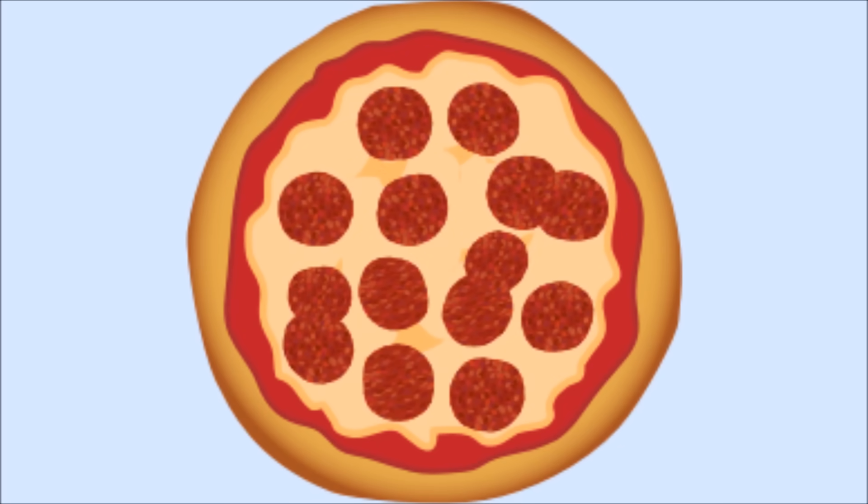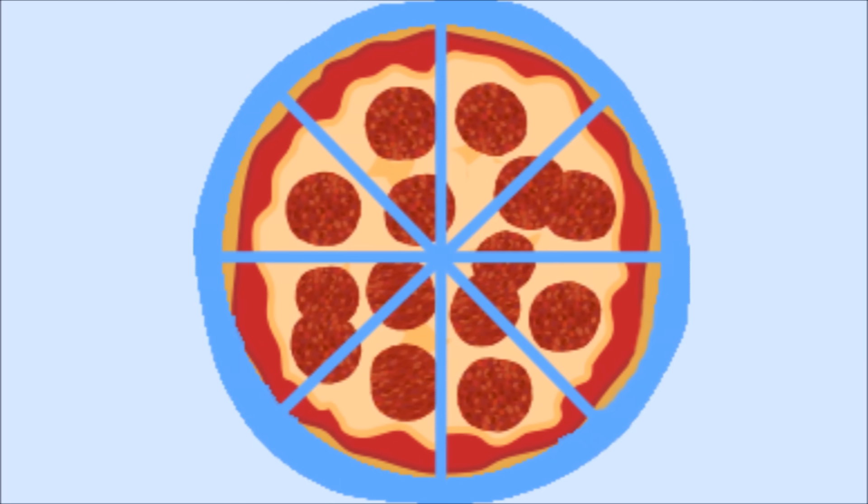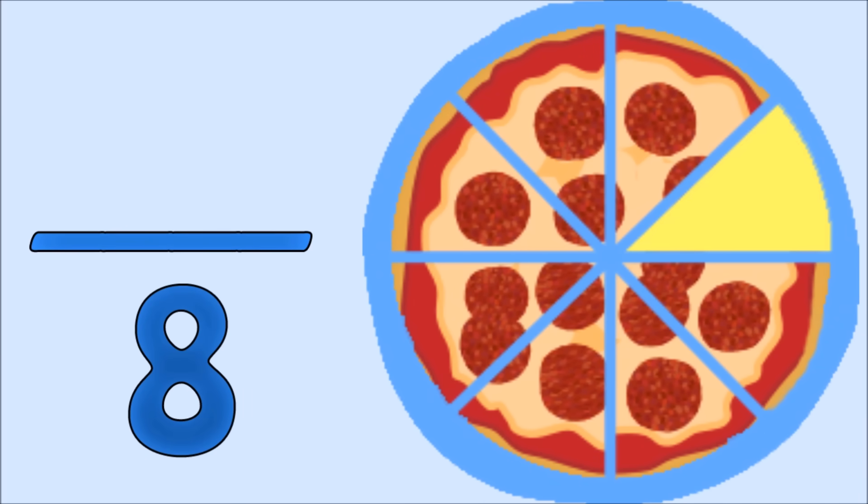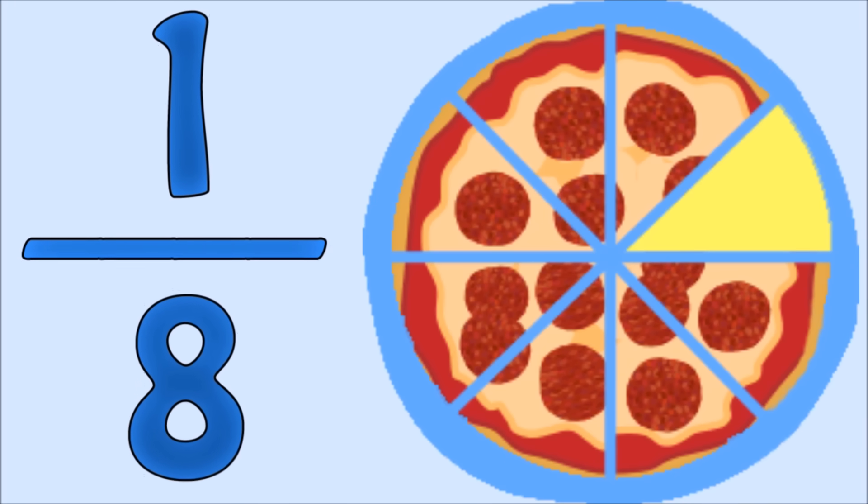For example, a pizza is usually divided into eight slices. That means that in a fraction, the denominator would be eight. If you normally eat one slice of pizza, then one would be the numerator. That means that you eat one-eighth of a pizza.